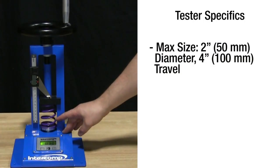The valve spring tester can measure springs up to two inches in diameter and can accommodate up to four inches of travel.